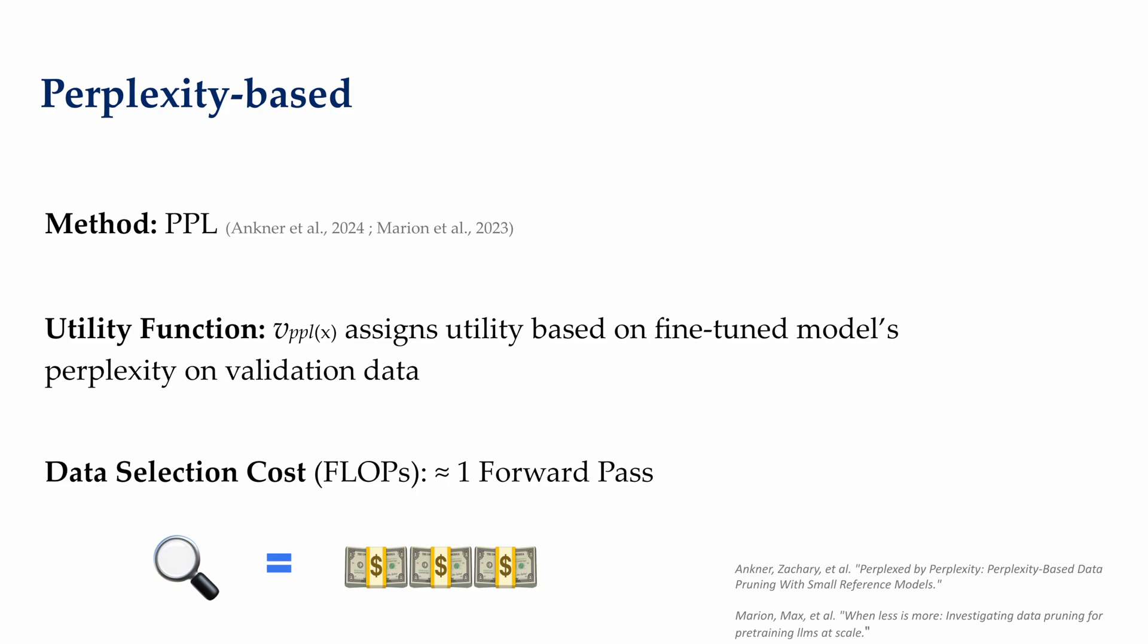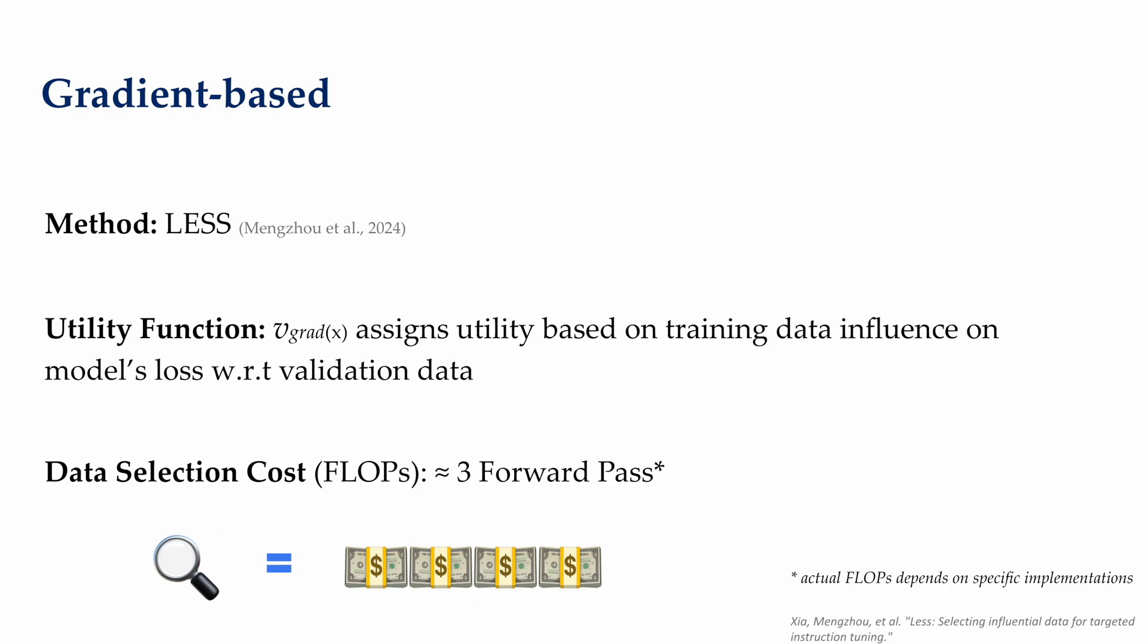A less common but increasingly popular method is to score documents using the perplexity of a language model trained directly on the validation set, and then evaluate the model on every training data point, using perplexity as a proxy for utility function. The compute needed per data point is therefore the number of flops required to perform one full forward pass of that particular model.